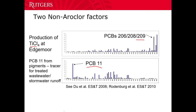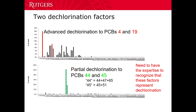The remaining two fingerprints from the PMF program: one was dominated by PCB 4, and the other by PCB 19. That is what I'm calling the advanced dechlorination factor, because 4 and 19 have 2 and 3 chlorines respectively. The last factor was dominated by PCB congeners that have 4 chlorines — 47 and 51 are indicators of partial dechlorination. So when you see those two fingerprints, you have evidence that dechlorination did occur in these real world samples.